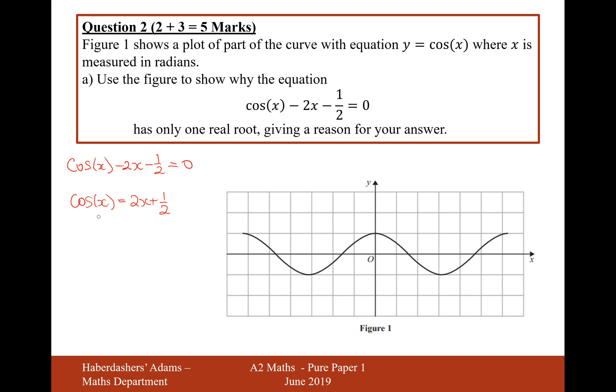Then if we draw this graph y equals cos x and then we draw this graph y equals 2x plus one-half, then the solution to this initial equation will be the amount of intersections of these two graphs.